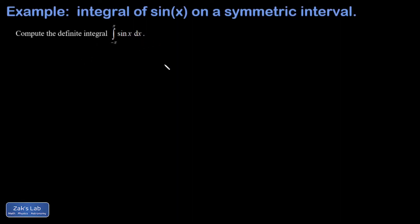In this problem, we're asked to integrate the sine function on a symmetric interval from negative pi to pi. Whenever you see a symmetric interval, you should immediately begin thinking about the parity of the function you're integrating—that means the evenness or oddness.